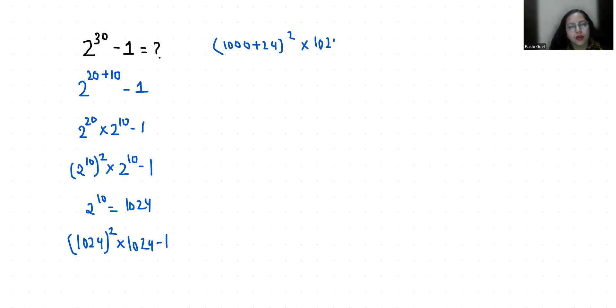So a plus b whole square is a square plus b square plus 2ab. So 1000 square plus 24 square is 576 plus 2 times 24 is 48 times 1000 is 48,000.